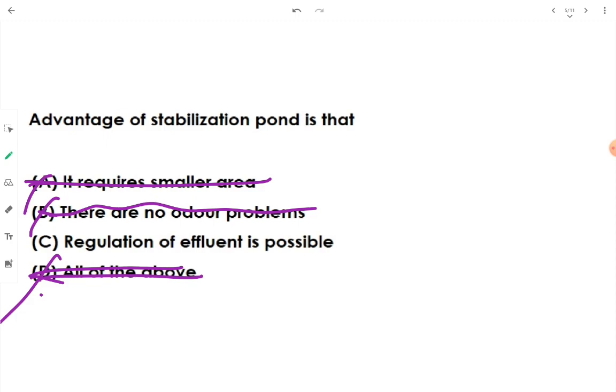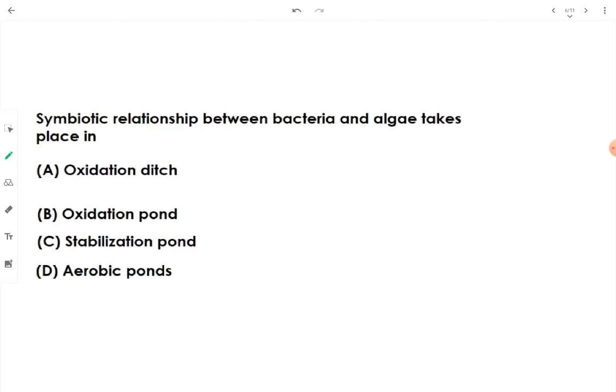Regulation of effluent is possible? Yes, this is possible. When we are talking about oxidation pond or aerated lagoon, the treatment is low cost, low maintenance, and we have control over the regulation of effluent because we can detain the wastewater for more time so that proper complete decomposition of organic matter takes place. Therefore, the advantage of stabilization pond is that we can regulate the effluent.